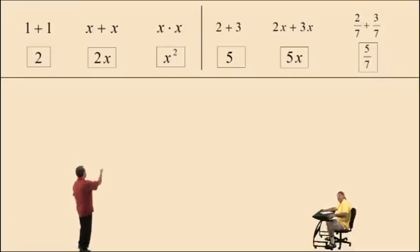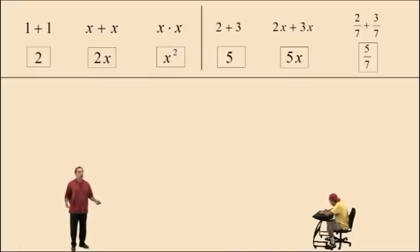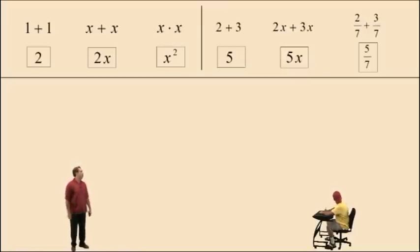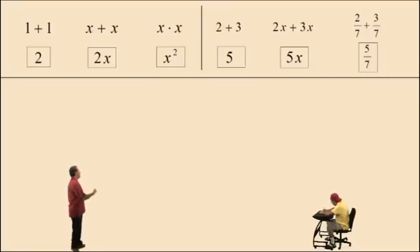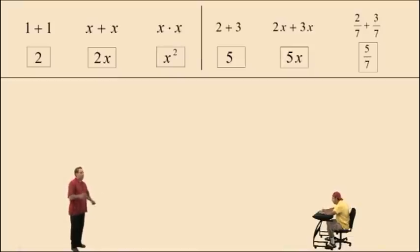So these 3 problems here only require that you have the ability to add 2 plus 3, because 2 and 3 are like terms. 2x's and 3x's are like terms. 2 sevenths and 3 sevenths are like terms. Notice 2 plus 3 is 5, 2x plus 3x is 5x, and 2 sevenths plus 3 sevenths is 5 sevenths. So if you know what your like terms are, it's just basic arithmetic.